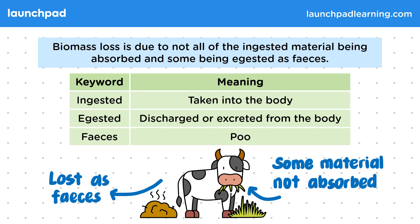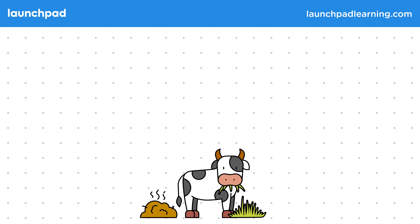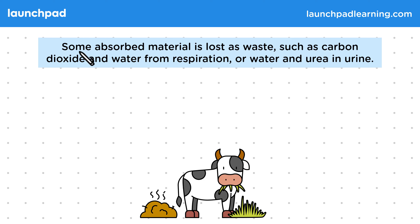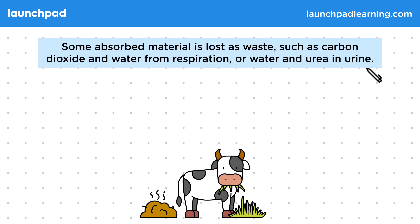How else is biomass lost between trophic levels? Some absorbed material is lost as waste, such as carbon dioxide and water from respiration, or water and urea in urine.